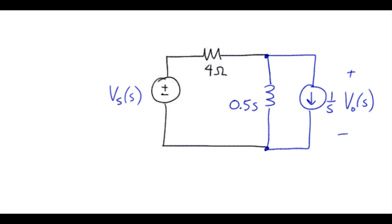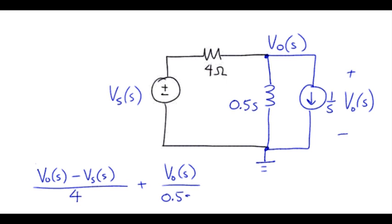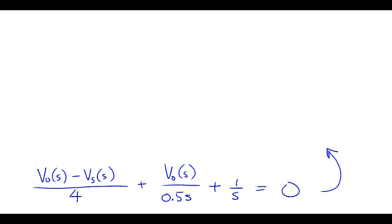Now, having found everything that we need for the S domain circuit, we can go ahead and apply whatever circuit analysis technique works the best. And looks like nodal analysis will come in handy. That's V out of S. So writing a single node equation, we've got V out of S minus Vs of S over 4, plus V out of S over impedance to ground, plus we've got a current exiting of 1 over S. And that equals 0. So let me collect some terms. V out of S goes with 1 fourth and 1 over 0.5S, so that would be 2 over S.